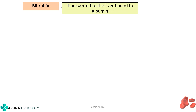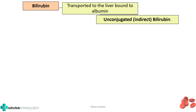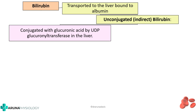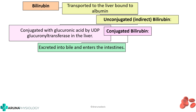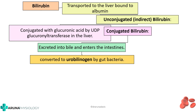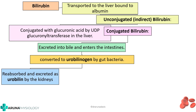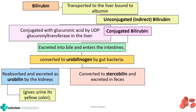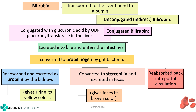To summarize: bilirubin is transported to the liver bound to albumin — this is called unconjugated or indirect bilirubin. In the liver, it is conjugated with glucuronic acid by UDP glucuronyl transferase to form conjugated bilirubin, which is excreted into bile and enters the intestine. Gut bacteria convert it to urobilinogen, which is either excreted as urobilin by the kidneys — giving urine its yellow colour — or converted to stercobilin excreted in feces giving it brown colour, or reabsorbed into the portal circulation as enterohepatic circulation.